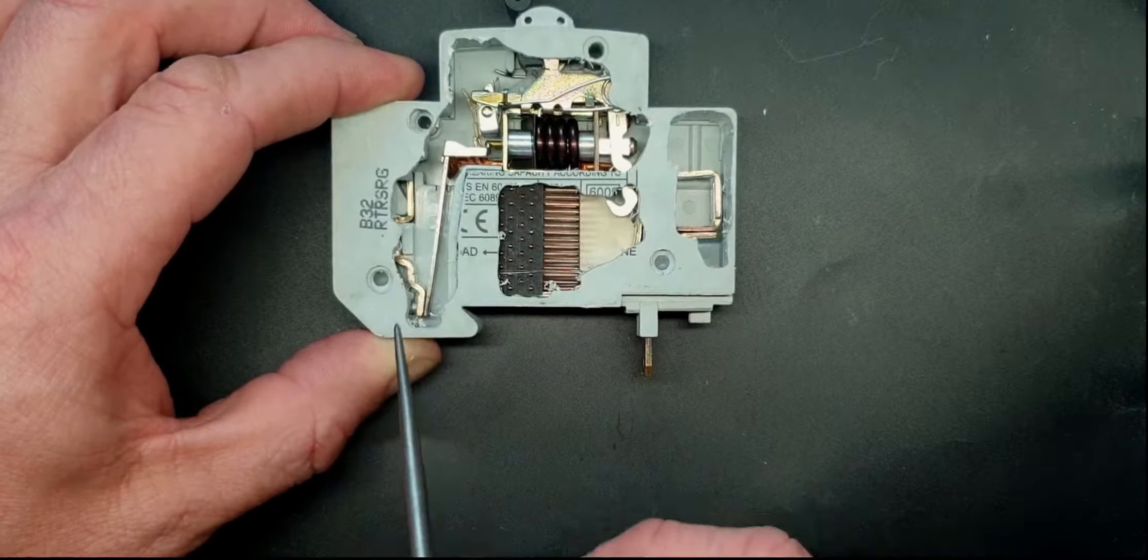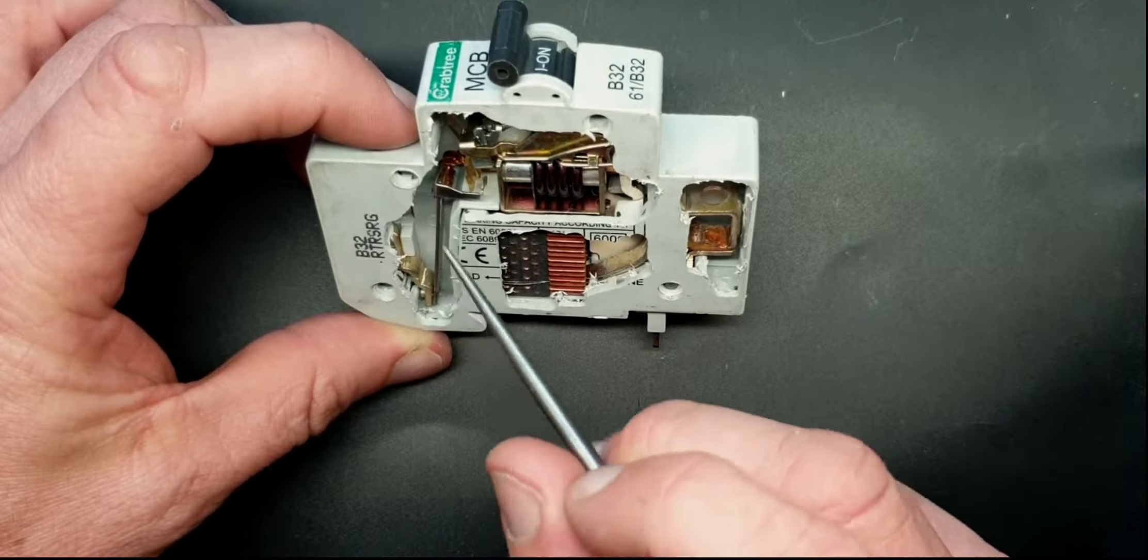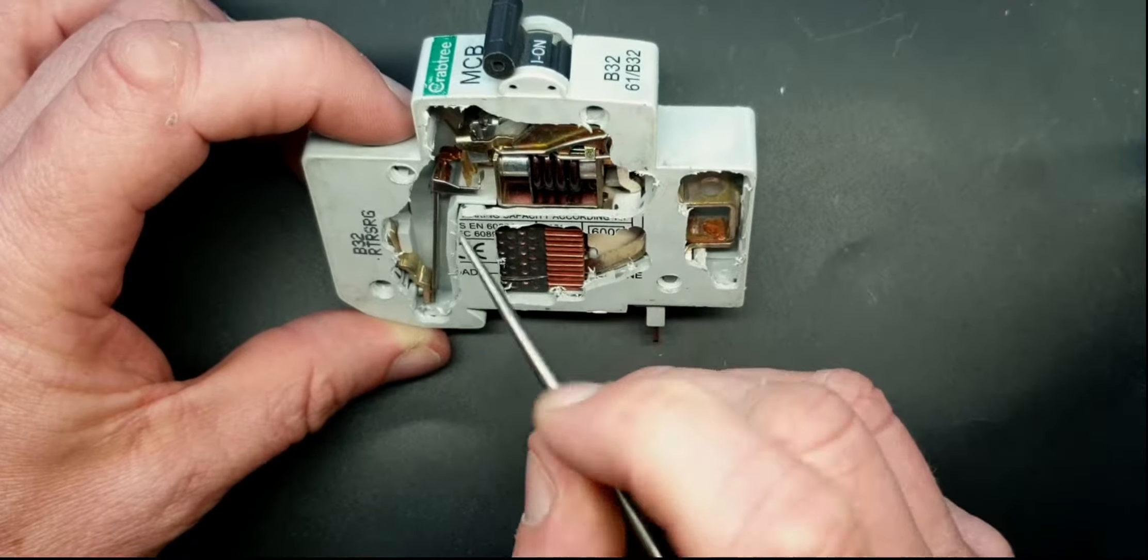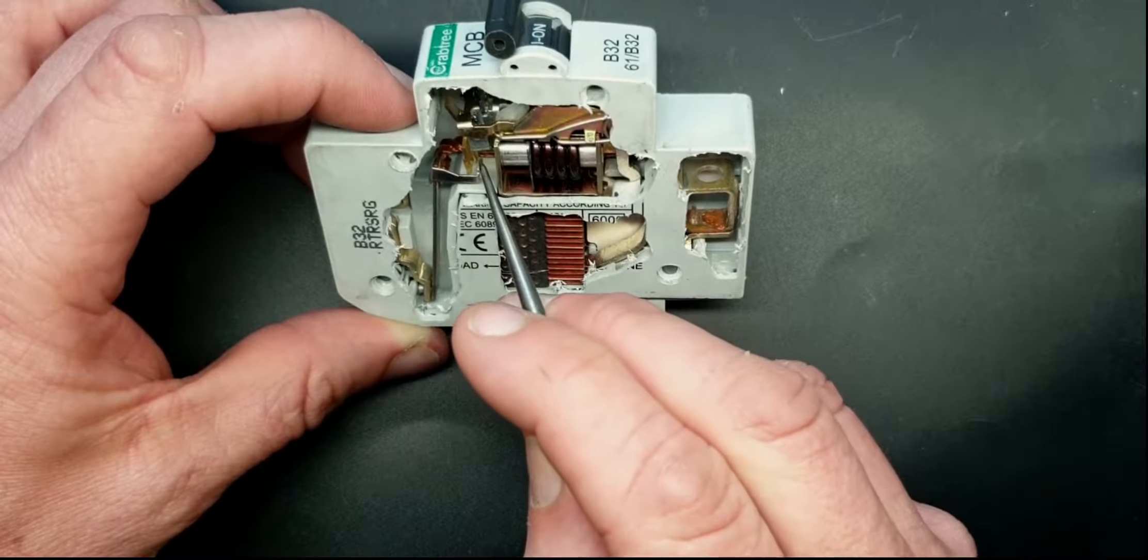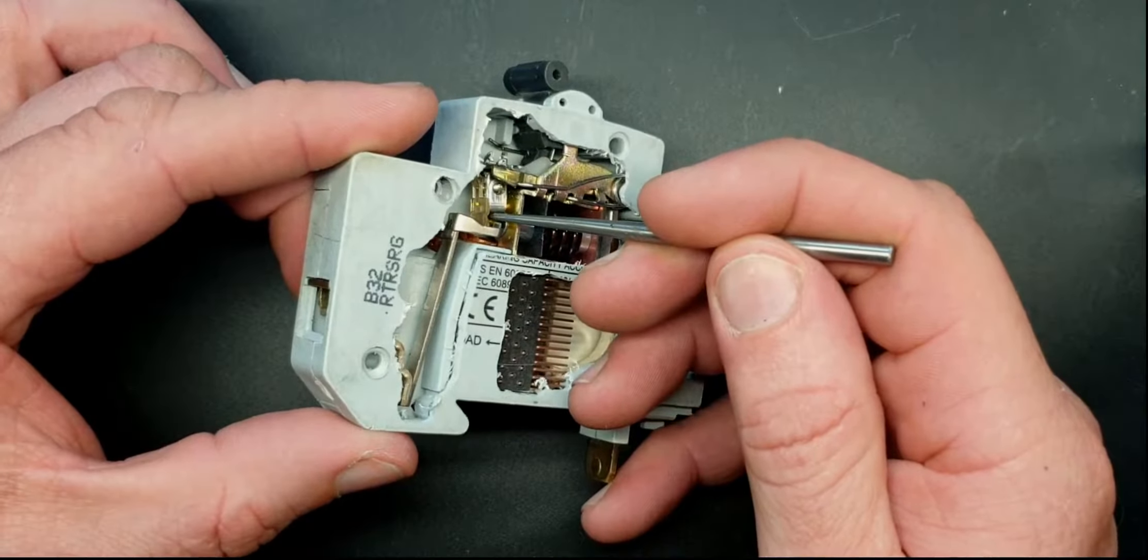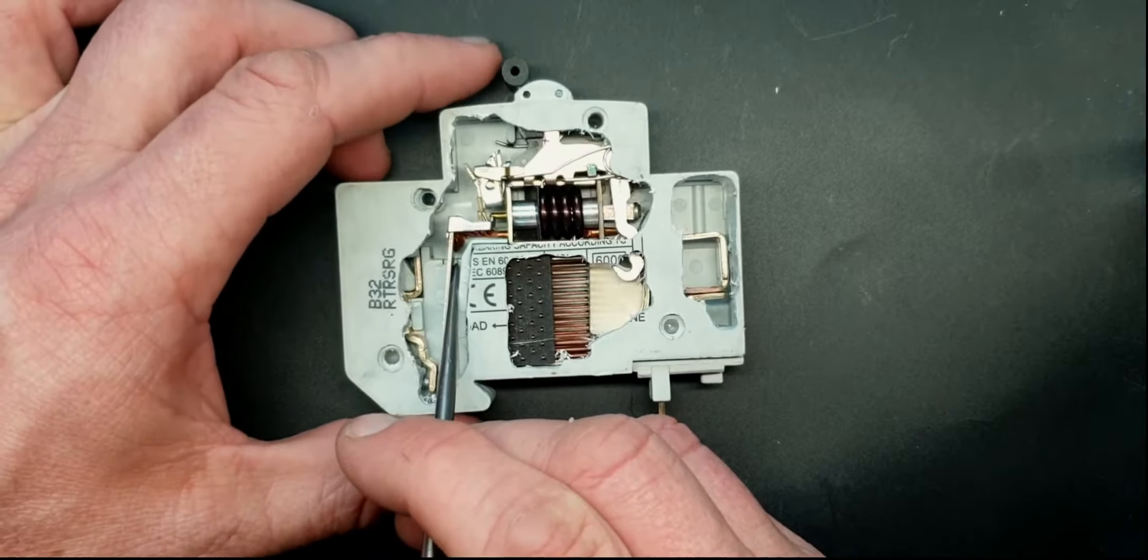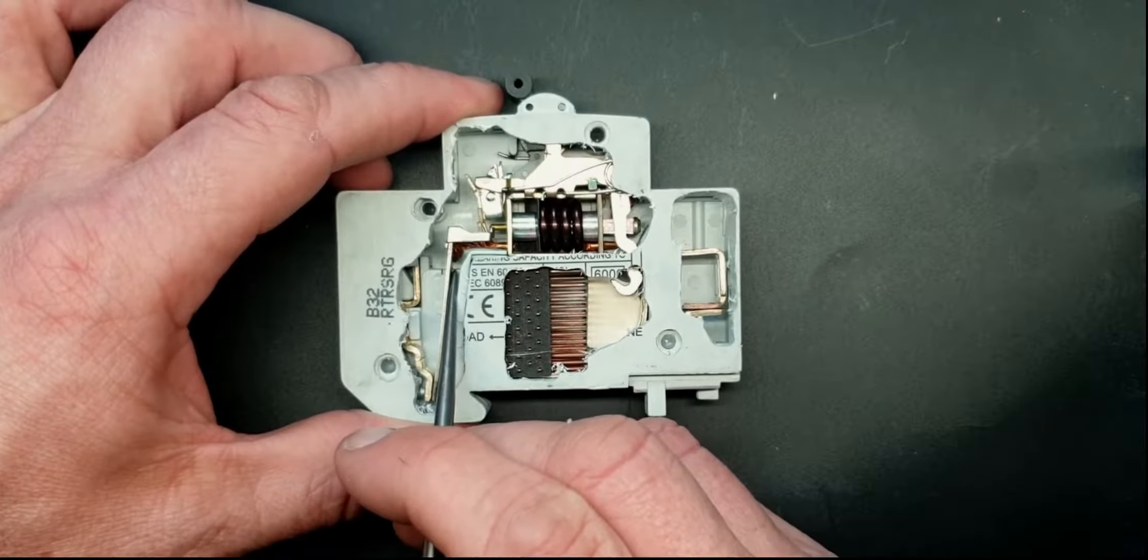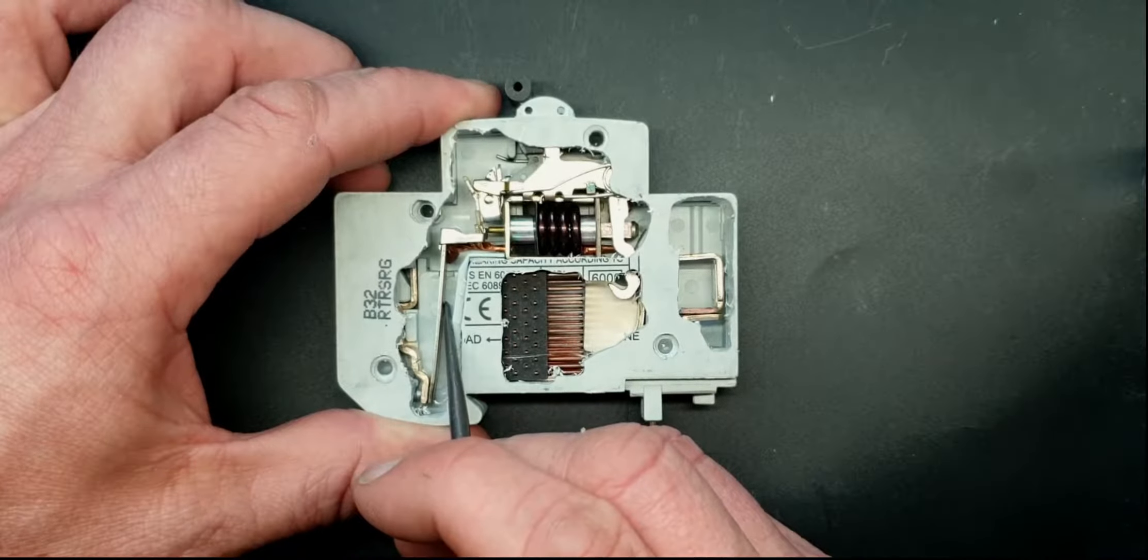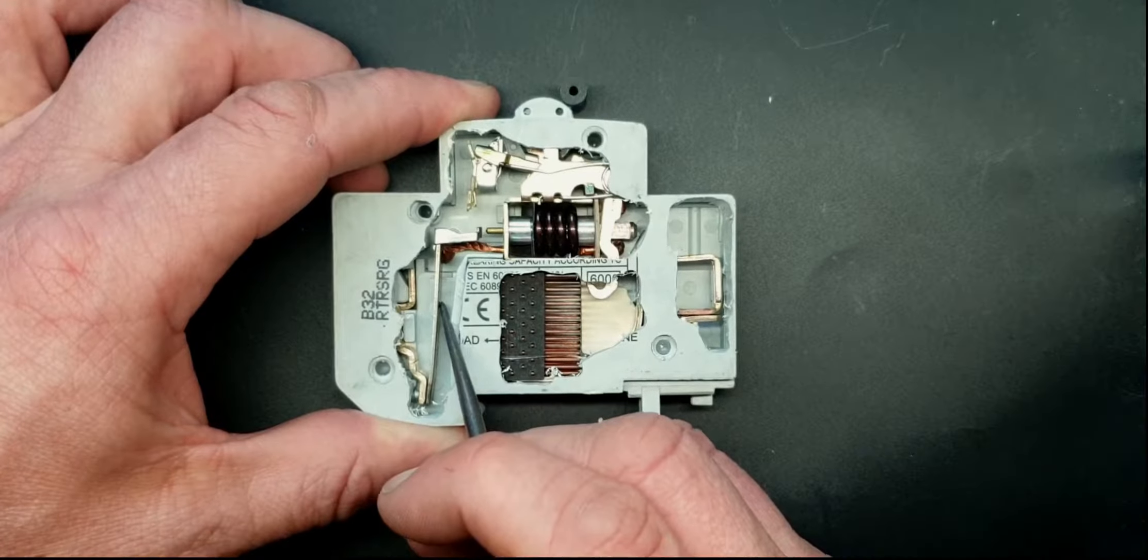You see, attached to the biometallic strip we've got a little hook. That little hook is going to come across and it's going to hit this little plastic pressure plate just here. So as that comes across it catches that pressure plate, brings it across and switches it off.